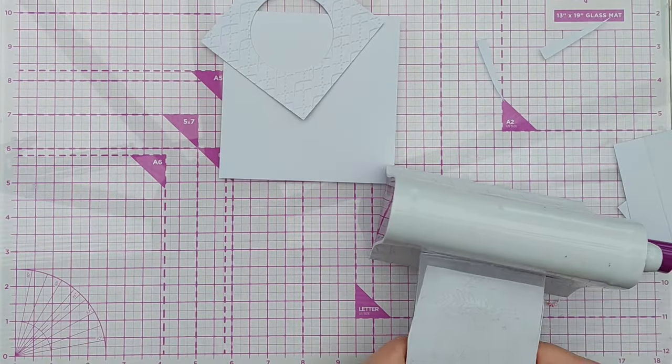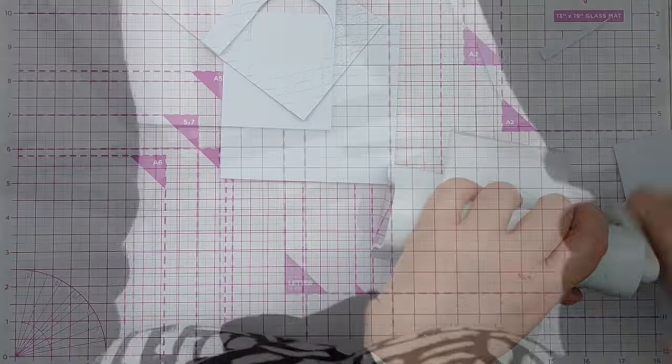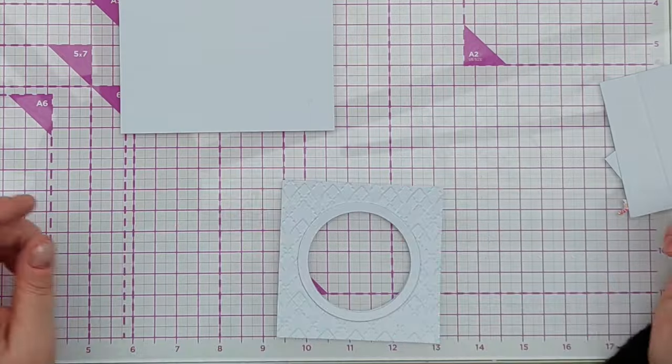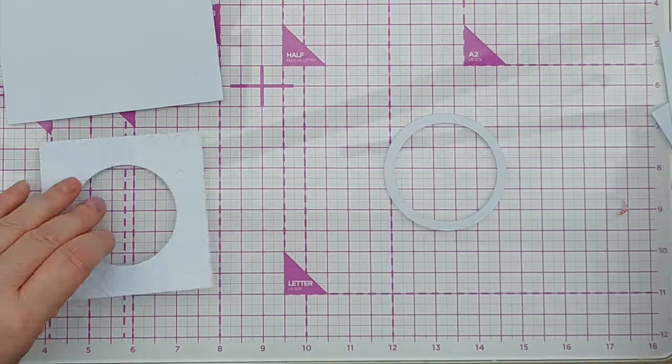In hindsight I might have used a stitched circle die for the larger circle so that the frame came out with a bit of stitching on it, but I'll remember that for next time.